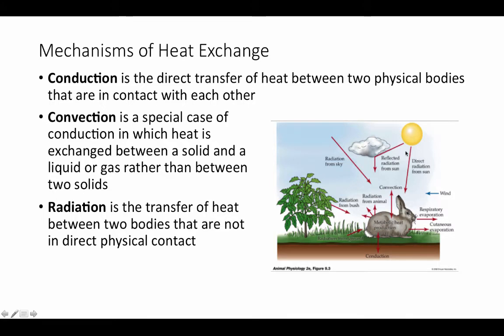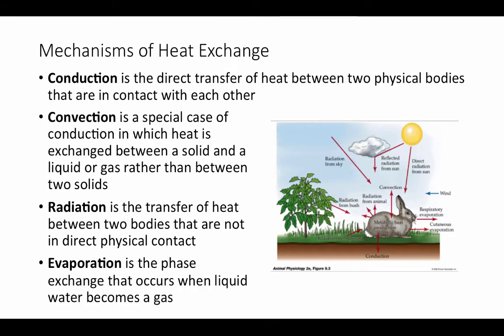Radiation is the transfer of heat between two bodies not in direct physical contact. Heat arrives from the Sun to Earth through radiation, and some of that radiant heat from the ground can warm animals. Anything above absolute zero gives off thermal energy as radiant heat. Heat is also lost through evaporation due to the phase change when liquid water turns into a gas — as an animal breathes, water evaporates from its mouth, nose, and lungs, which is a form of cooling.